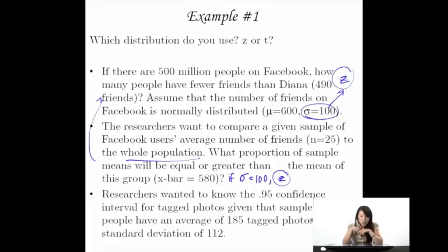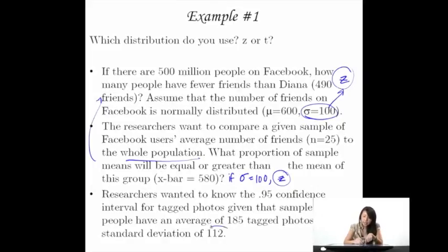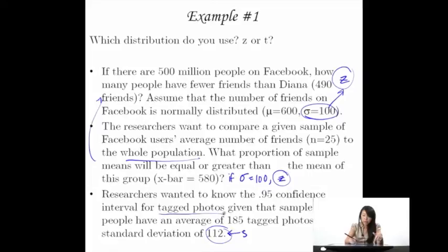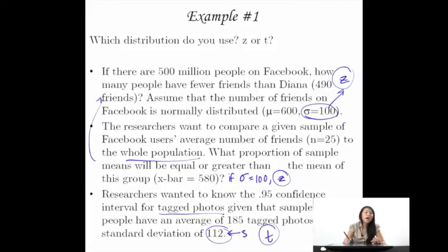What about this last one? Researchers want to know the 95% confidence interval for tagged photos, given that a sample of 32 people have an average of 185 tagged photos and a standard deviation of 112. Here it's very clear — since I know s but I don't know sigma for tagged photos, I only know sigma for friends but not for tagged photos. In this case I would use the t-distribution, because I'll have to estimate the population standard deviation from the sample standard deviation.